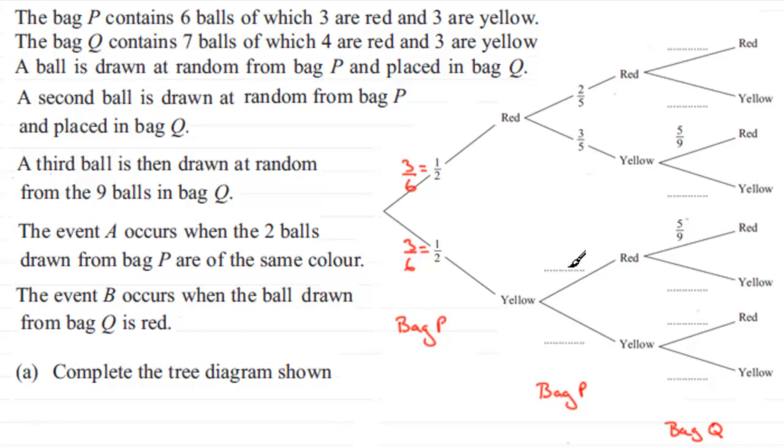Now, we've now got to go on to filling in these two values here. So what is the probability of picking out a red then, when we've already picked out a yellow out of bag P? Well, there's going to be just three reds in the bag, because we haven't picked out a red, three reds out of five balls. And that would mean that since these two must add up to one, this has got to be two fifths.